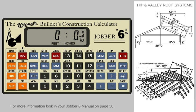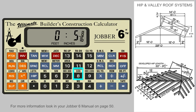So let's enter this as the run and assign it as the run. Now we can enter the roof pitch of 5½ inches and enter this in the pitch. To get the actual common rafter length, we press the slope key.